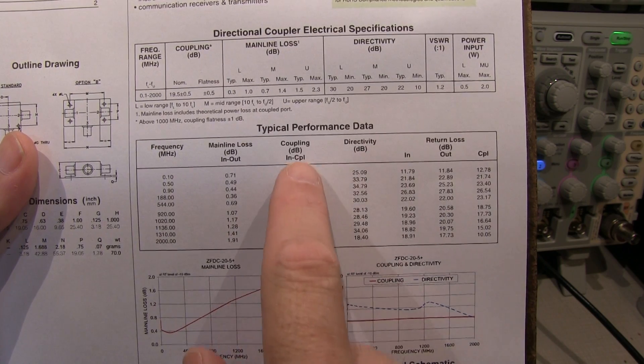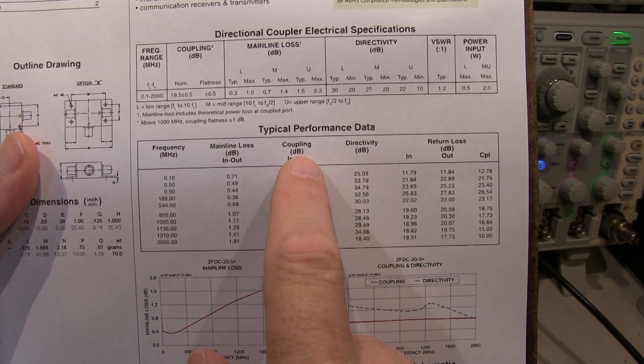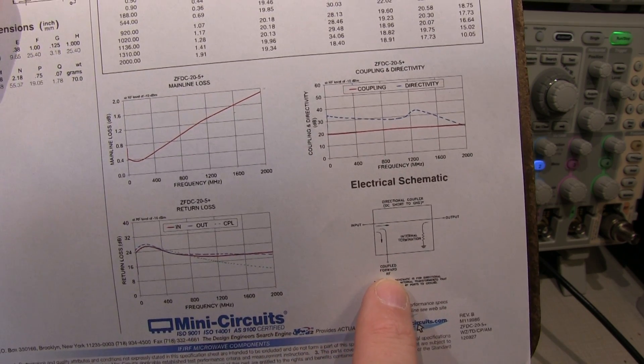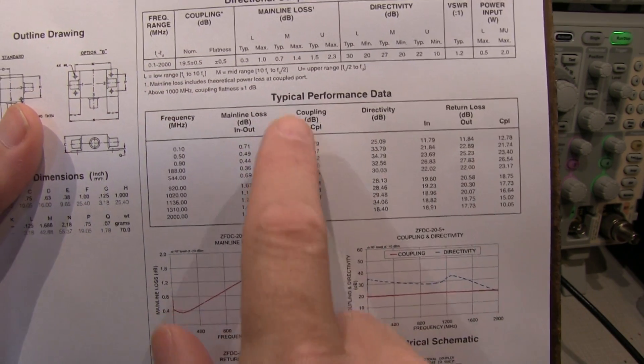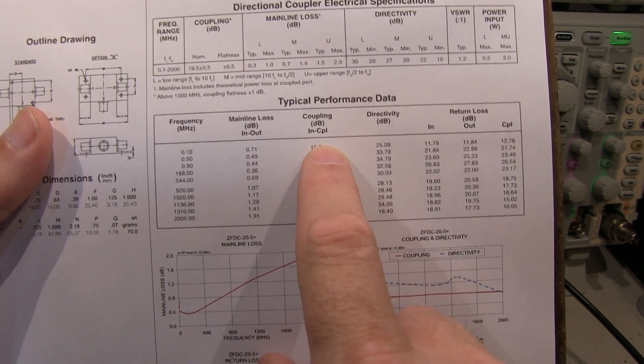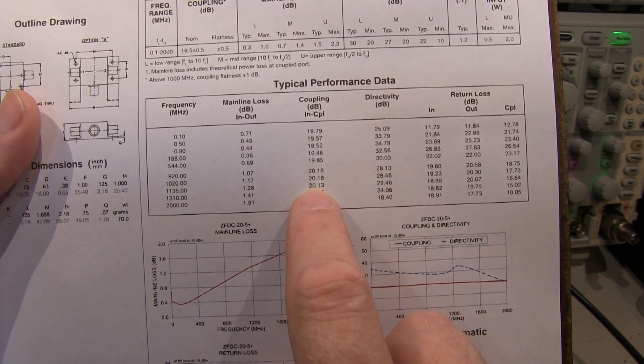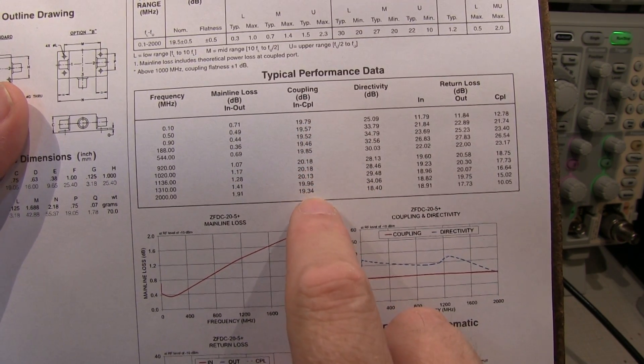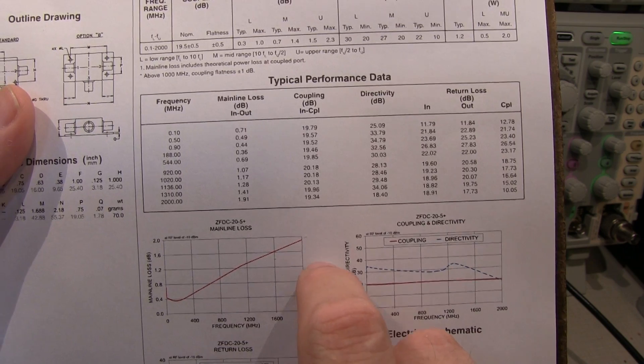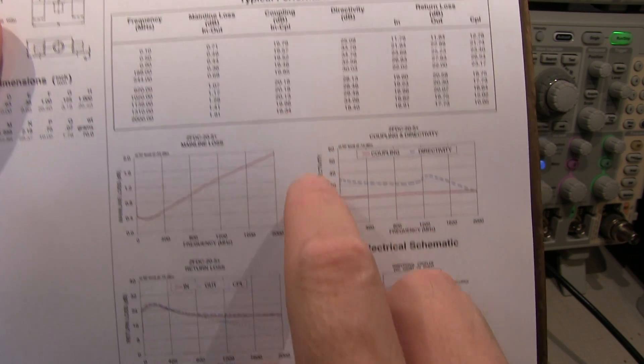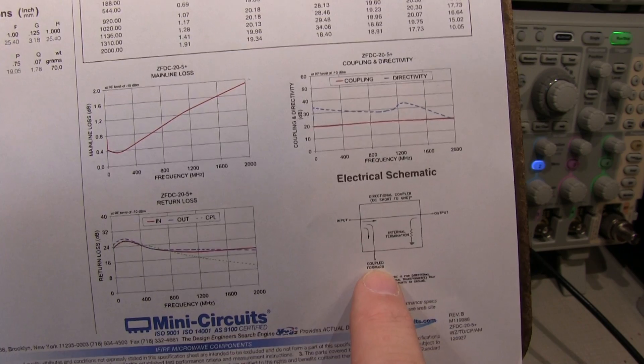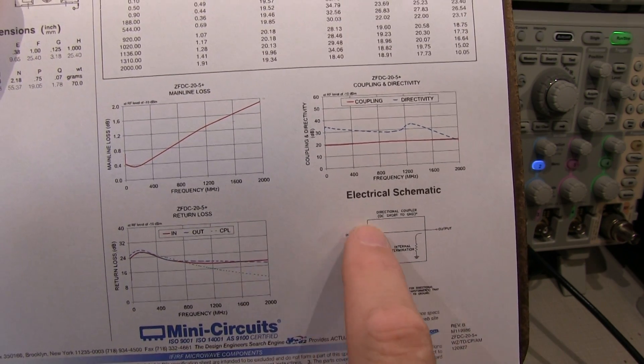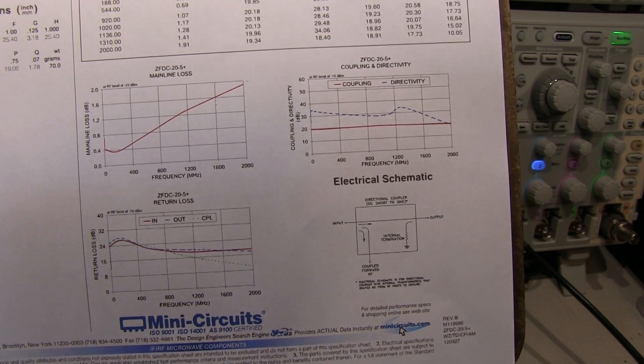The next important spec is called the coupling spec. The coupling spec basically says for that coupled output, how many dB down is it compared to the signal on the main line? And we can see for this one that it's typically about 20 dB. It's typically actually just a little bit under 20 dB, but we can call this a 20 dB coupler. So what that means is that the signal coming out of this port here will be 20 dB down from the main signal going here. In terms of voltage, that's a factor of 10x. So let's take a look at that on the scope.